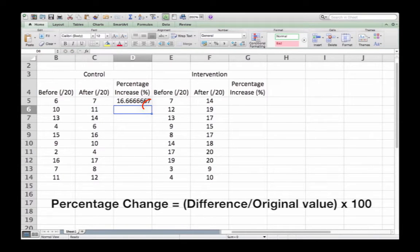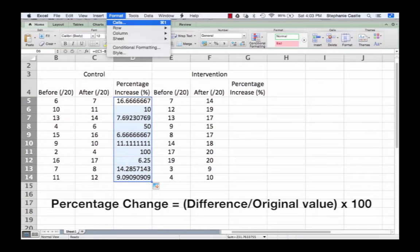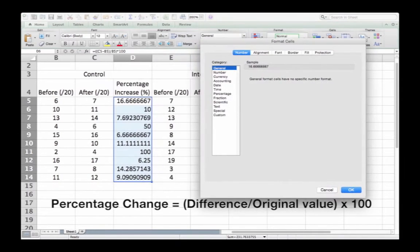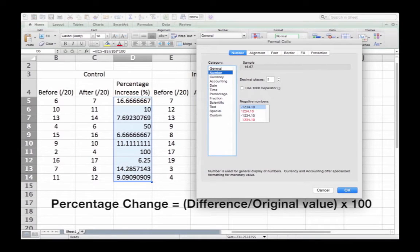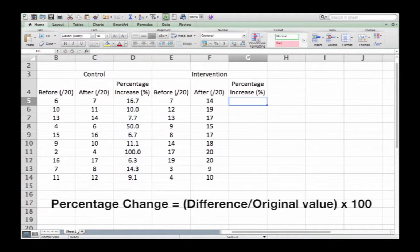Grab the little square on the bottom right of the first cell and drag this formula down the column. To make it simple to look at, we're changing each cell to show the value to one decimal place and centering it. We'll then repeat this for the other group.